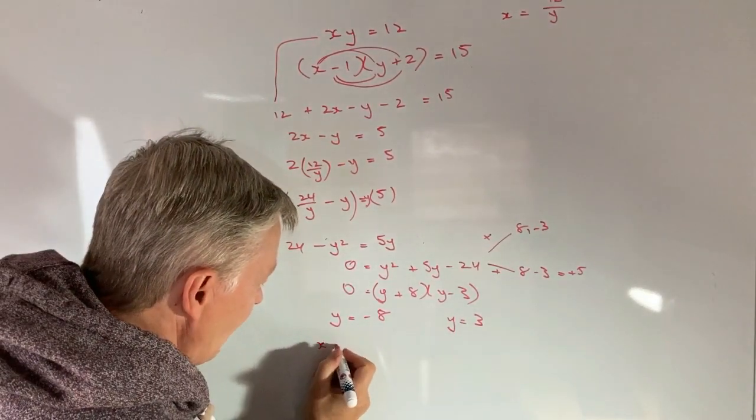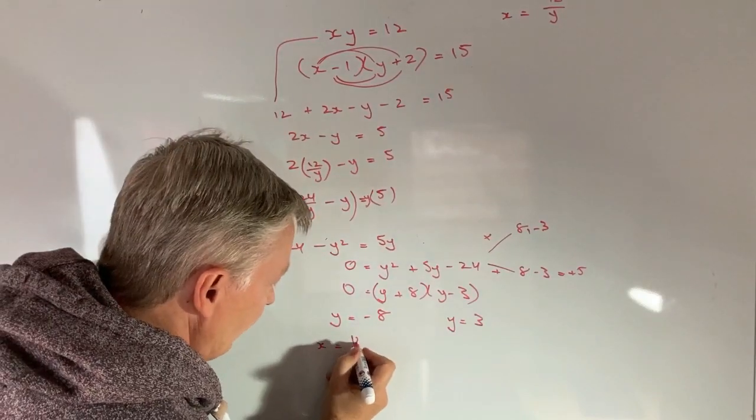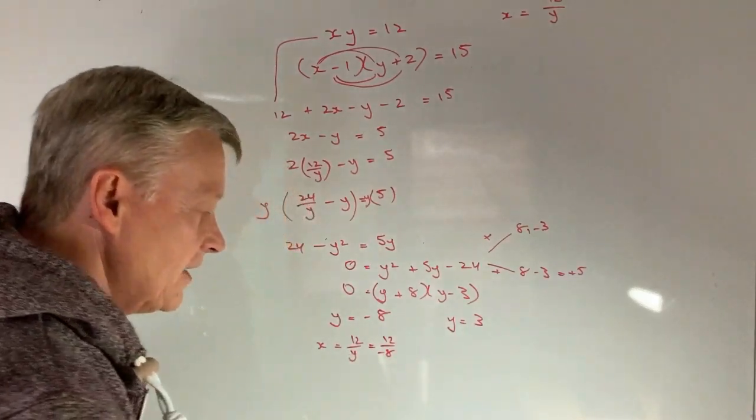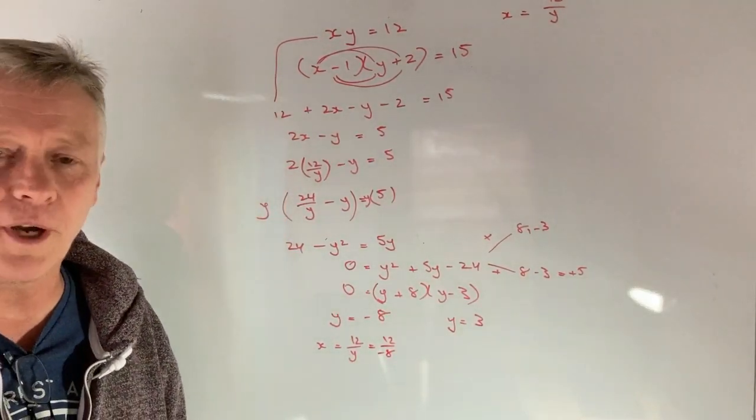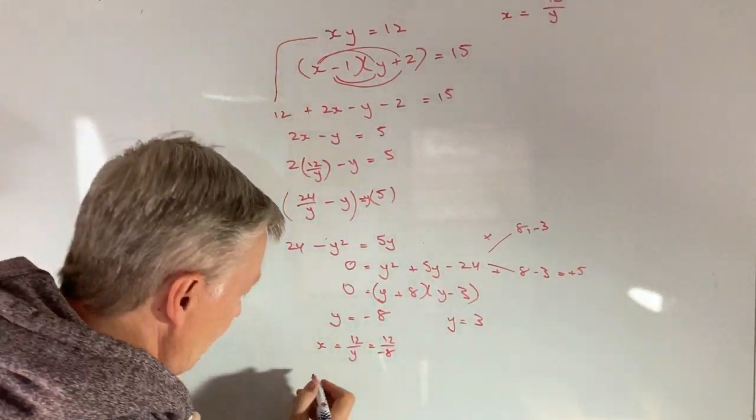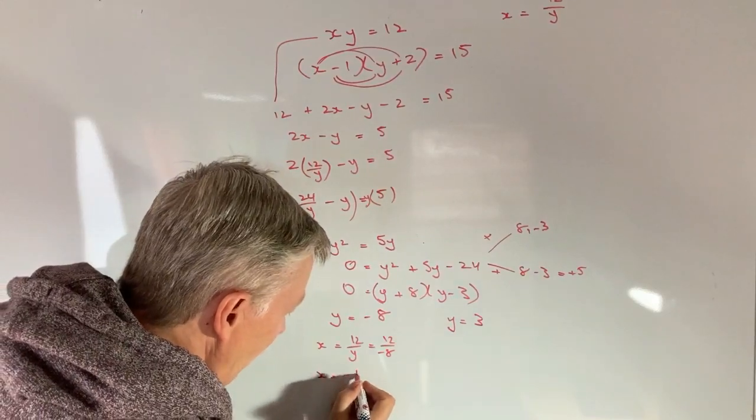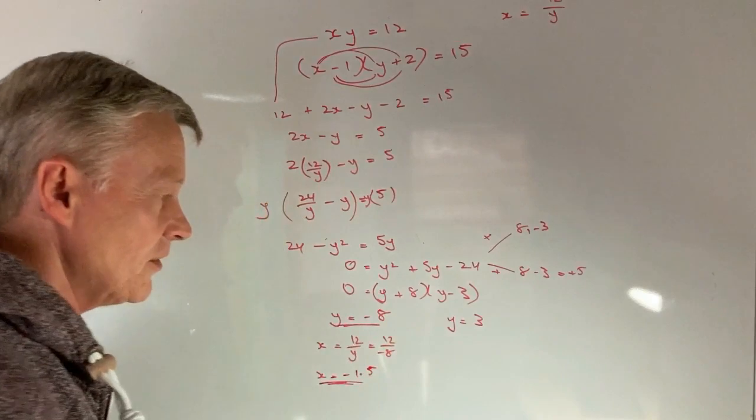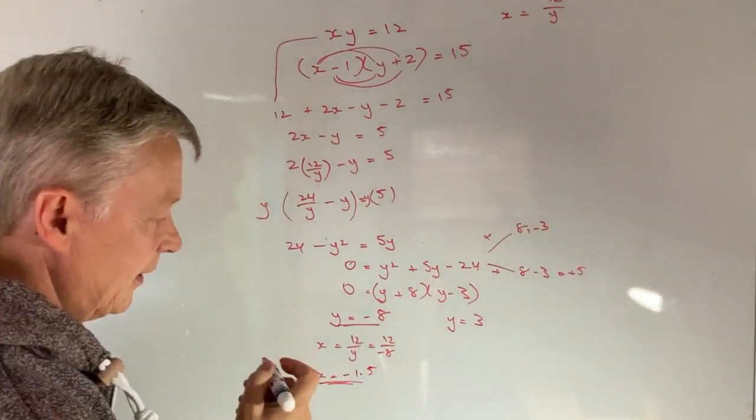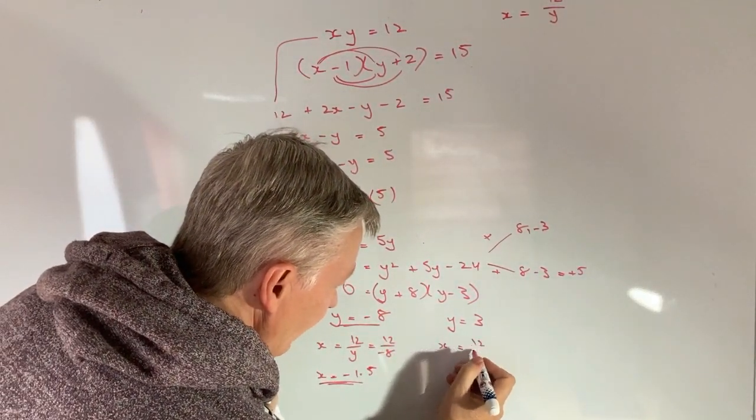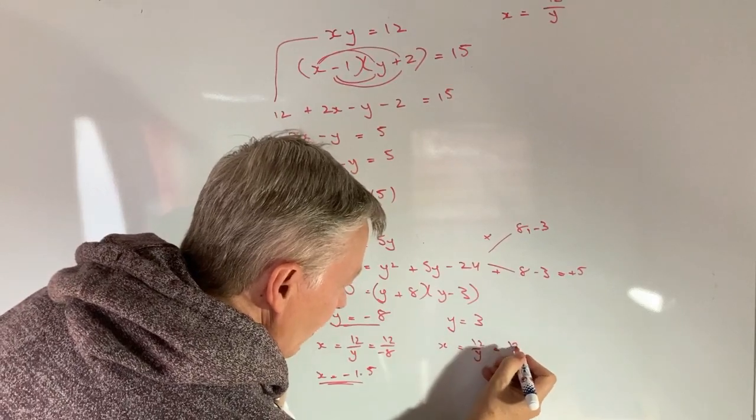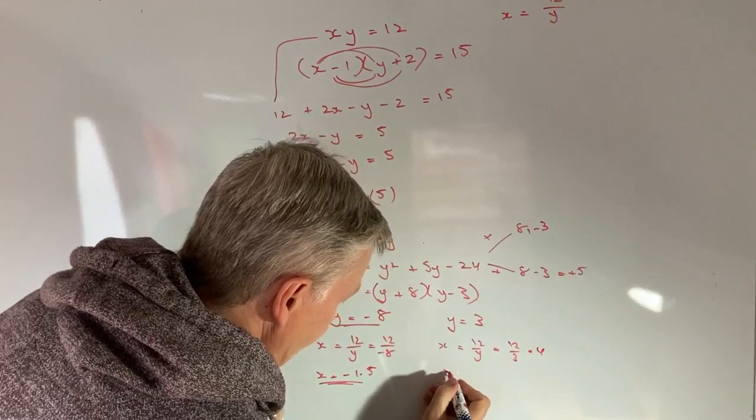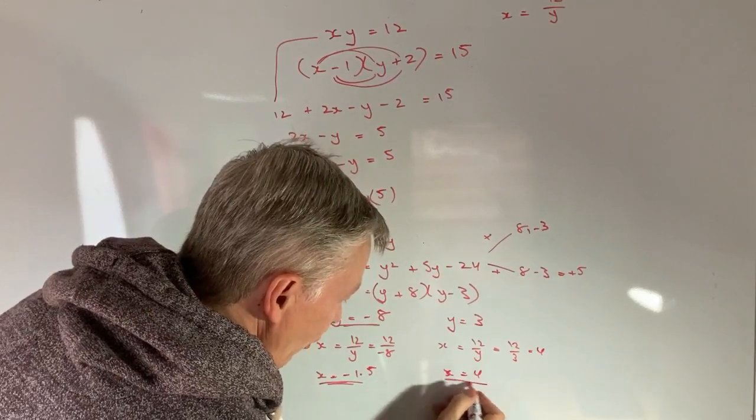So I've got x equals 12 over y, which is the same as 12 over minus 8. So 12 divided by minus 8 is going to be x equals minus 1.5. So I've got those two values there. And then y equals 3. Well, x equals 12 over y, which is 12 over 3, which is 4. So therefore, x equals 4.